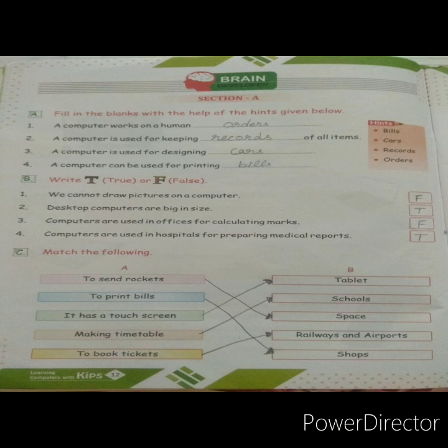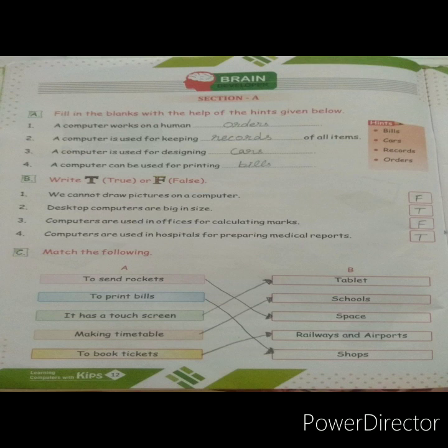Next, Question B: Write true or false. You have to write T for true and F for false. First question — we cannot draw pictures on a computer. Can we not draw pictures on a computer? That is false; we can draw. Second — desktops are big in size. Desktop computers are big, so we need a table or desk. That is true.